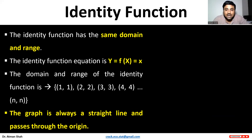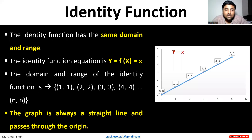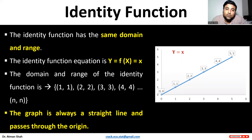See this diagram. This is y = x, the identity function. Here we have the coordinate pairs (0,0), (1,1), (2,2), (3,3), (4,4), (5,5), up to (n,n).